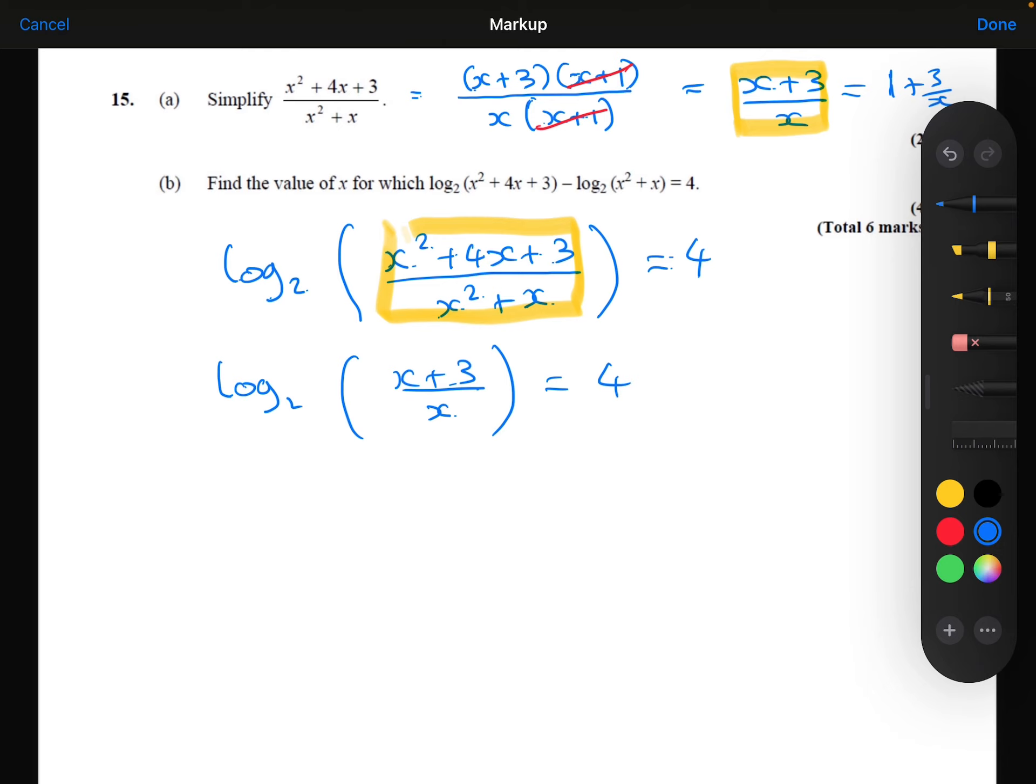Now I can remove the logarithm. The inverse of log base 2 is 2 to the power. So I'm going to do 2 to the power on both sides. 2 to the power log base 2 will cancel out and just leave me with the x plus 3 over x. And on the right hand side, the 2 to the power 4 is 16.